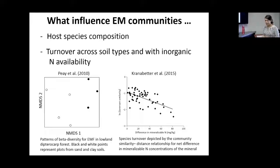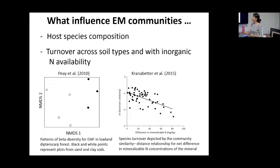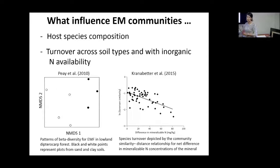We're going to focus mostly on ectomycorrhizae. What influences the ectomycorrhizal community are two main factors. First is the plant host species — different host species and families will influence the community, so we find a different ensemble of species depending on the host plant species. We also know there is a turnover in species composition according to varying soil types and organic nitrogen availability. These are examples comparing community composition between soils with sandy and clay textures, and also comparing communities across a nitrogen availability gradient.